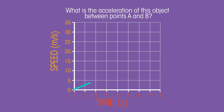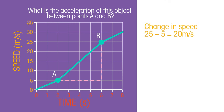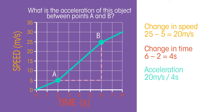What's the acceleration of this object between points A and B? The change in speed is 25 minus 5, which equals 20. The change in time is 6 minus 2, which equals 4. So the acceleration is 20 meters per second over 4 seconds, which equals 5 meters per second per second.